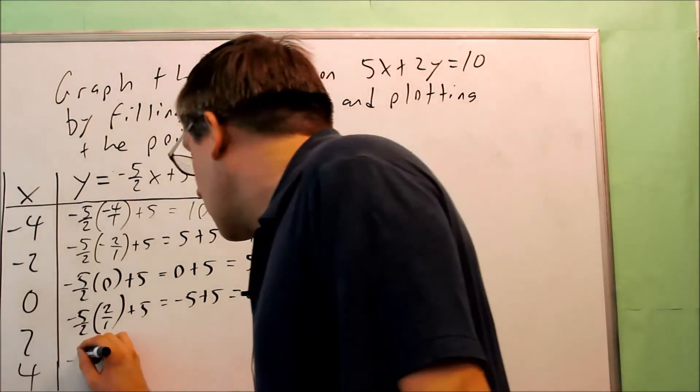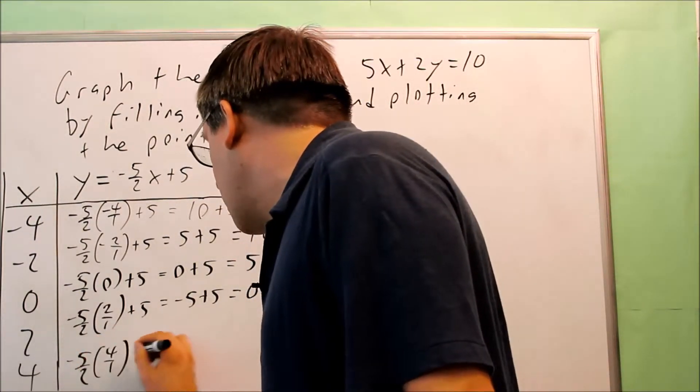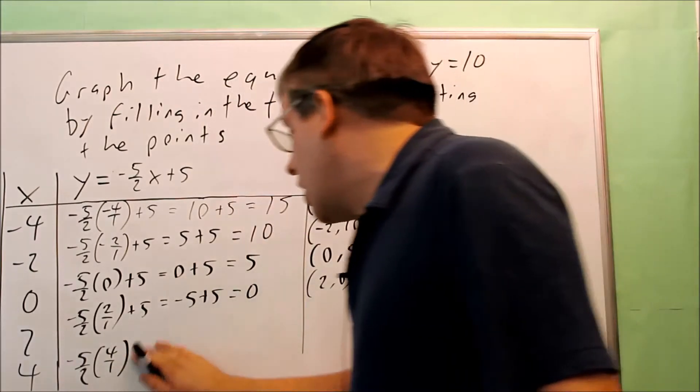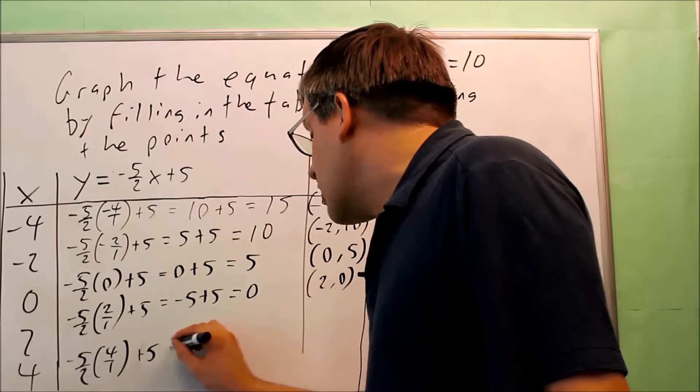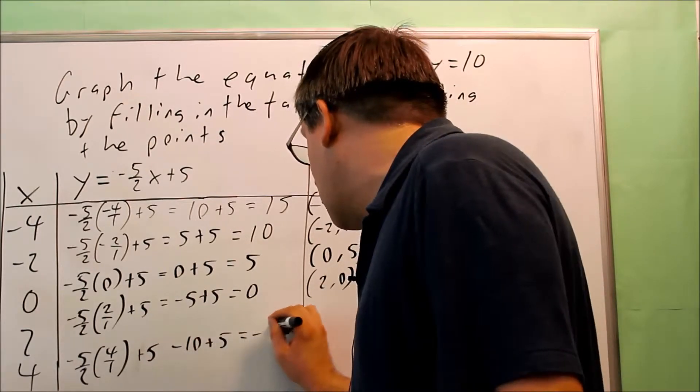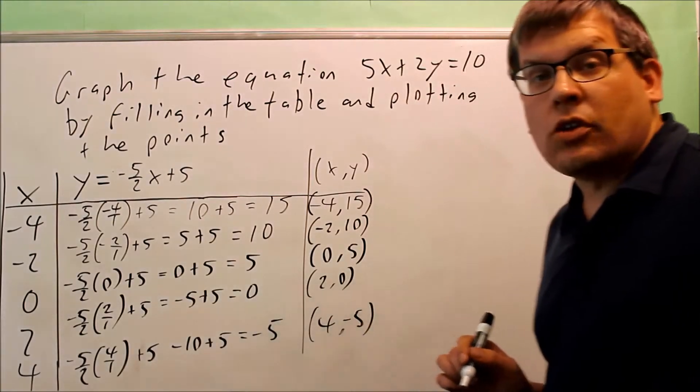For 4, negative 5 halves times 4 over 1. When you multiply this, don't forget to add the 5. Negative 20 over 2 is negative 10 plus 5. That gives you negative 5. So 4 comma negative 5 will be the last point.